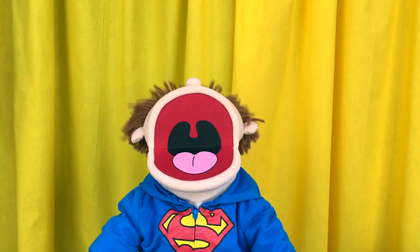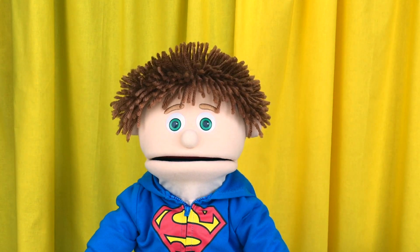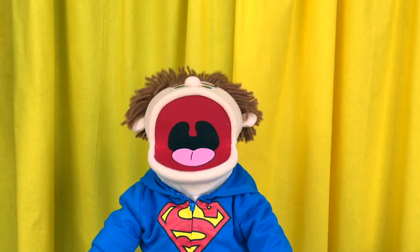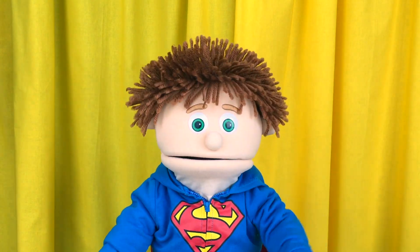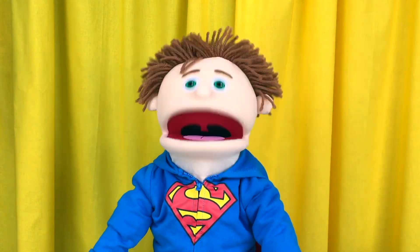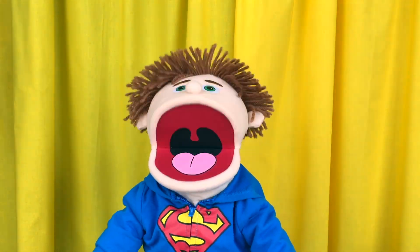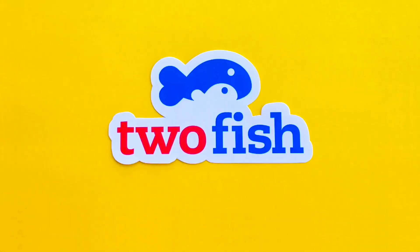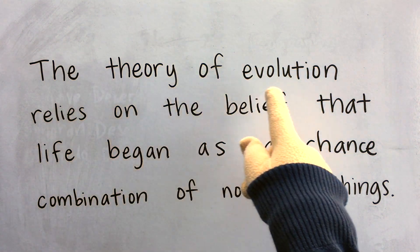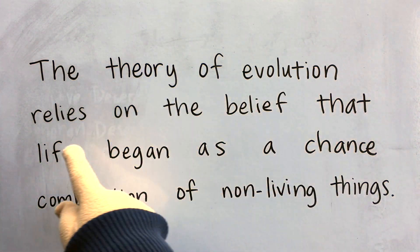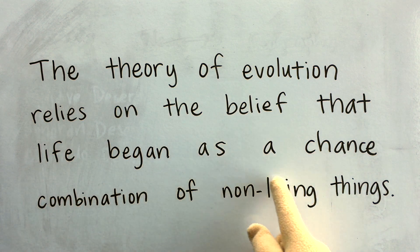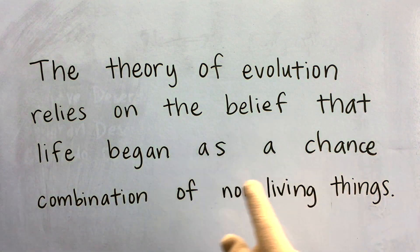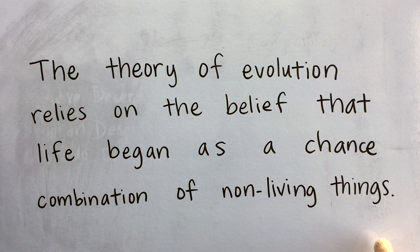Classical Conversations, Cycle 3, Week 21, Science. What does the theory of evolution rely on? The theory of evolution relies on the belief that life began as a chance combination of non-living things.